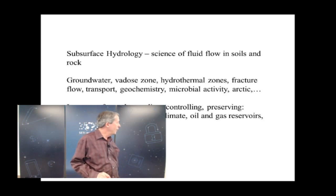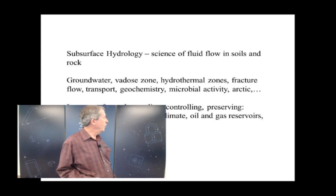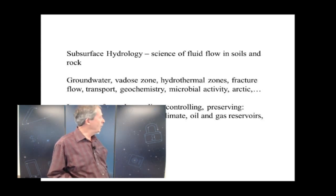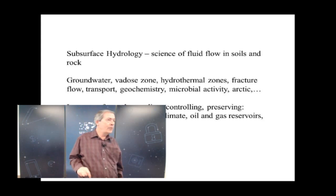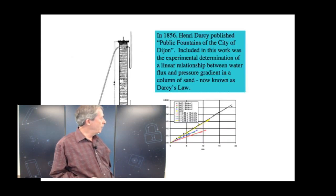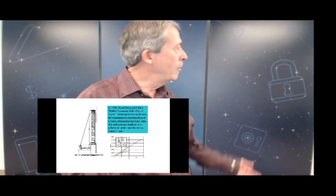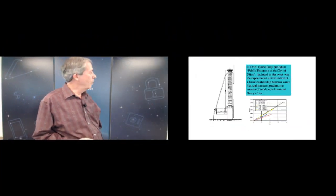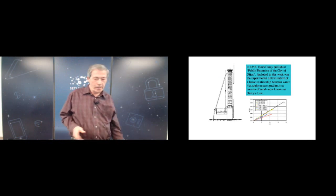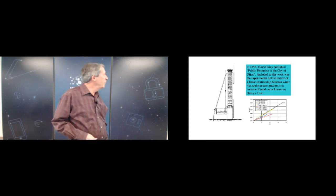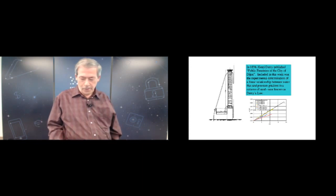Actually, the modern era of groundwater hydrology or subsurface hydrology started, I think, in 1856 when Henry Darcy published his report on the public fountains of the city of Dijon, France. And he did a lot of experiments on sand columns and water flow through the sand columns and came up with the linear relationship between water flux and pressure gradient in a column of sand, which is now famously known as Darcy's Law. From those humble beginnings, the science of hydrology has grown enormously.